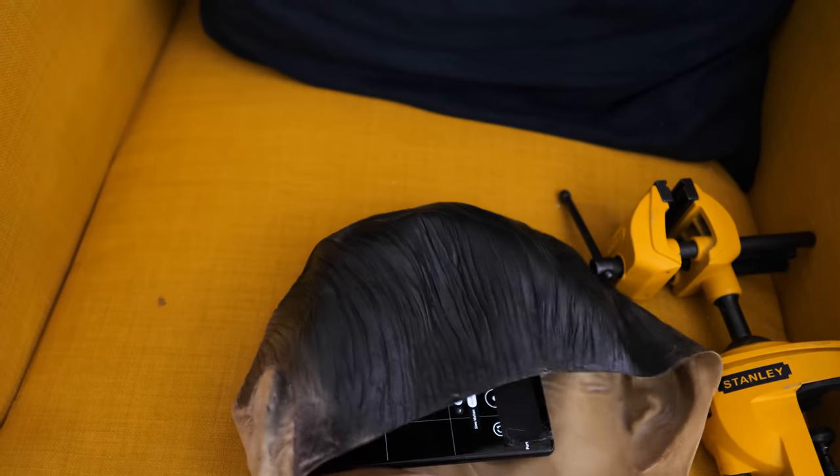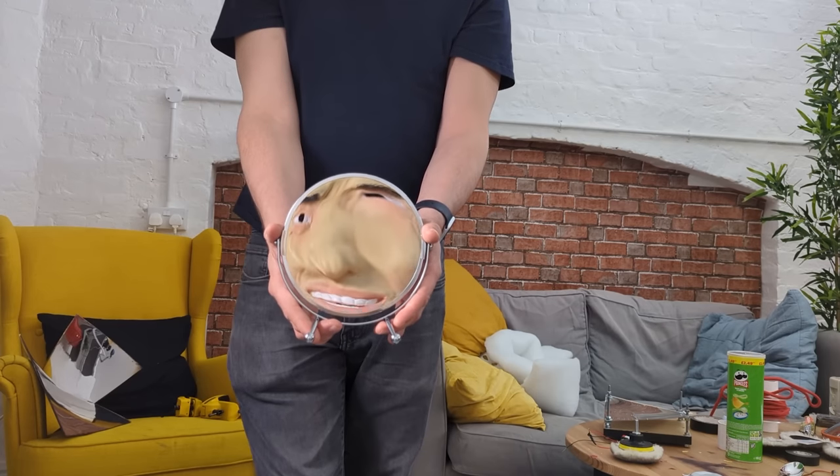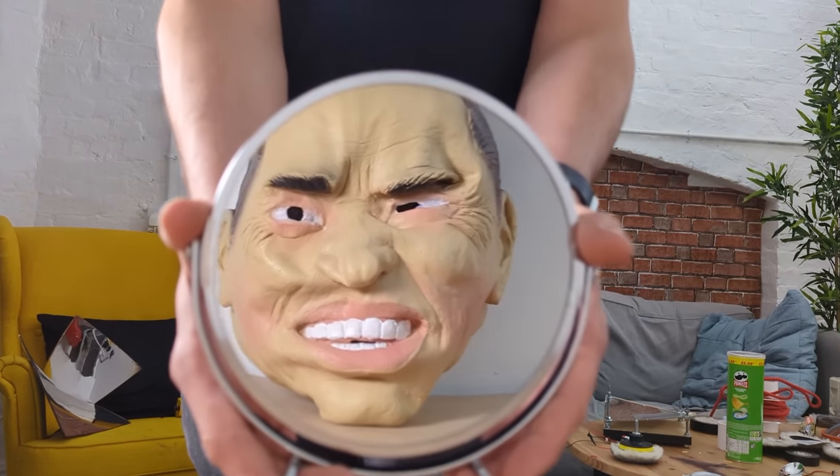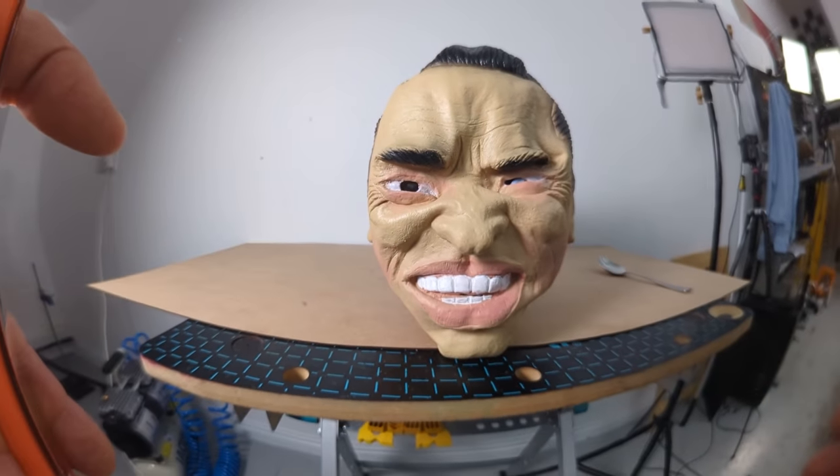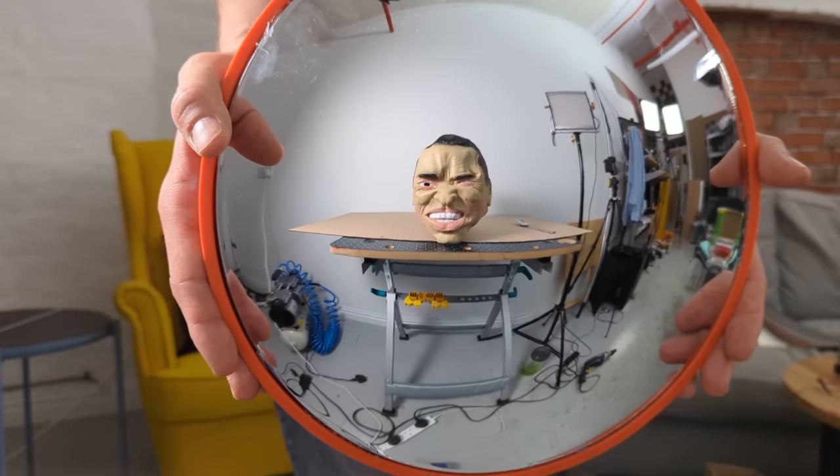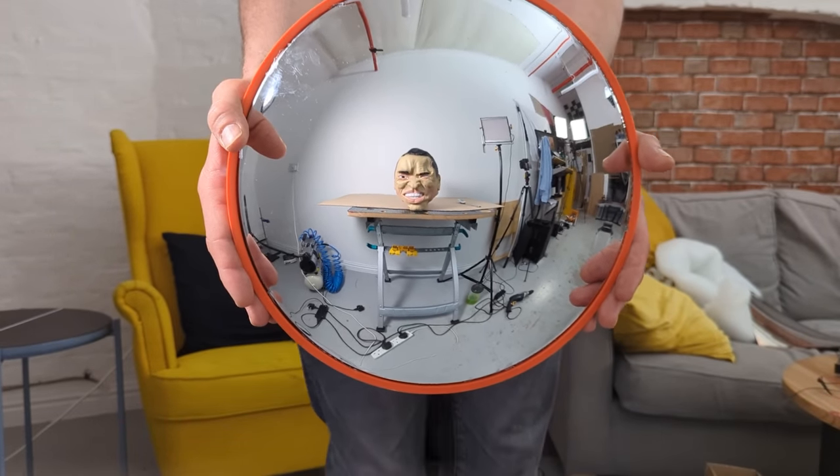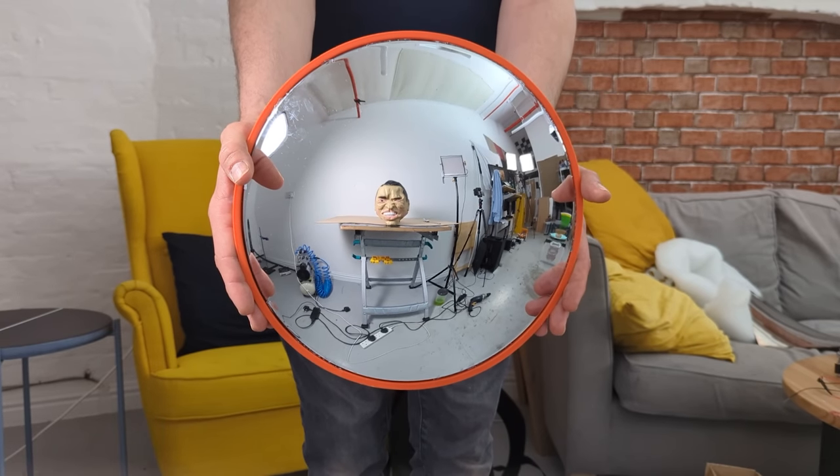So I stuck my phone to the inside of this Arnold Schwarzenegger mask. So this is what it's like to be Arnold Schwarzenegger looking into a concave mirror. And this is what it's like to be Arnold Schwarzenegger looking into a convex mirror. But what's it like to be Arnold Schwarzenegger looking into a mirror that's convex and concave at the same time?